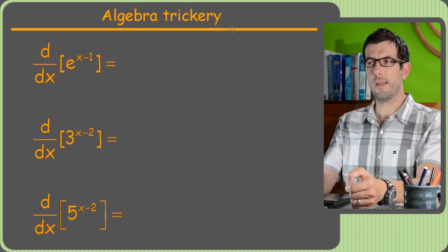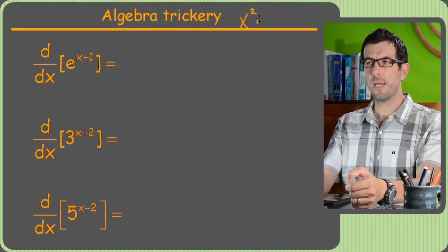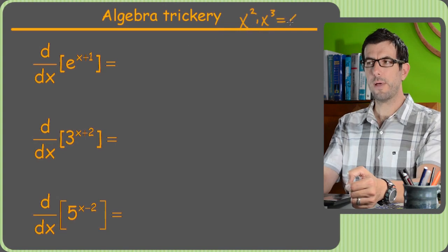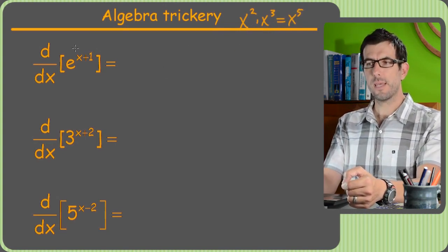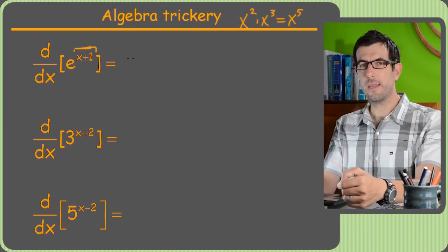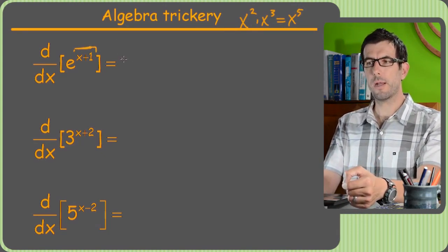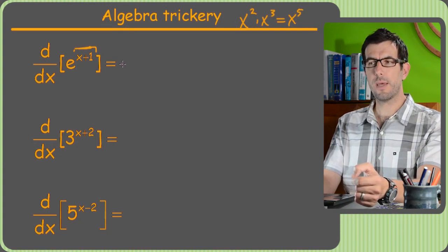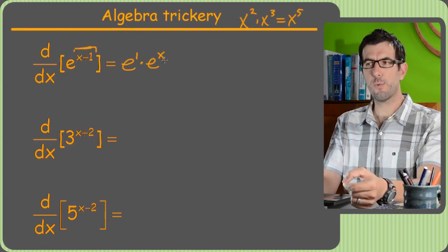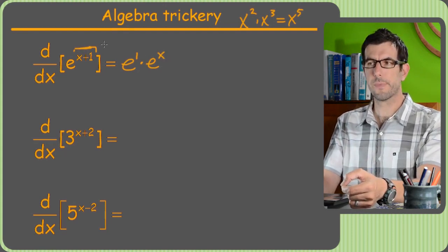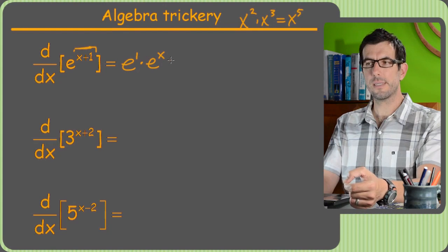So right here, I want you to remember that if you ever had x squared times x cubed, didn't that equal x to the 5th? We just added the exponents. Well this one, it's like they've already added it, and you can just unadd it. You can do the opposite, you can pull it back apart. So you can say, you know what, e to the x plus 1, that would actually be e to the 1 times e to the x, because if you multiply these two together, wouldn't you get x plus 1 as your exponent?